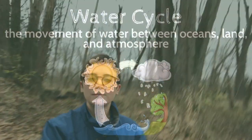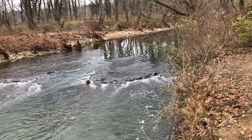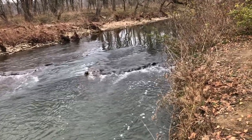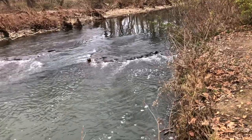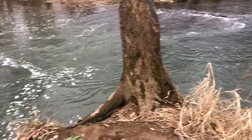Take some time to think about different ways that the spheres are interacting around you right now. One way that the spheres interact with each other is the water cycle, which is the movement of water between oceans, land, and the atmosphere. Everything on the planet is constantly moving and changing, and changes in one sphere can have an effect on other spheres. One example of an Earth process that affects all spheres is the water cycle.